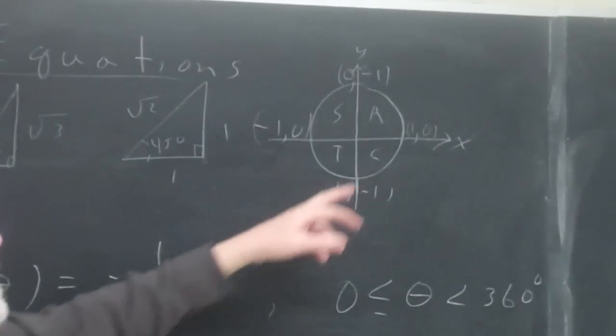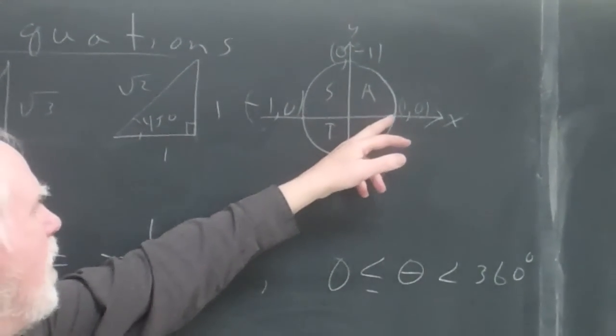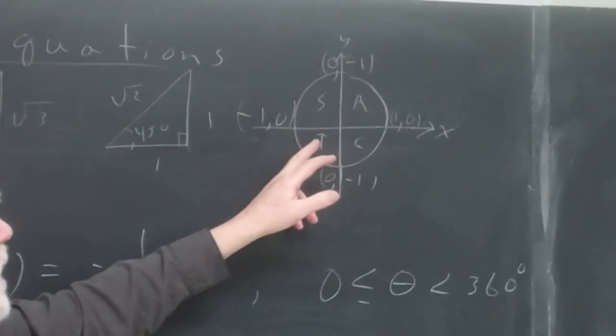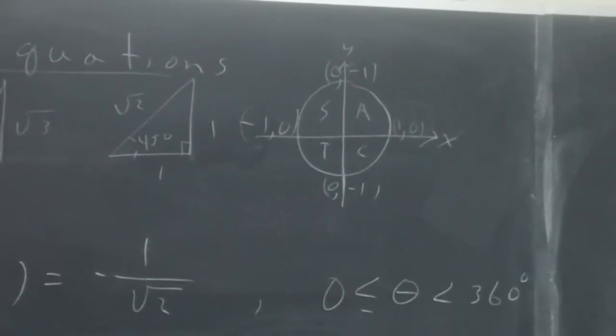Let me say that again. It has to be in the third quadrant and the fourth quadrant, because the sine is positive here, it's positive here, but it's not positive here and not positive there.